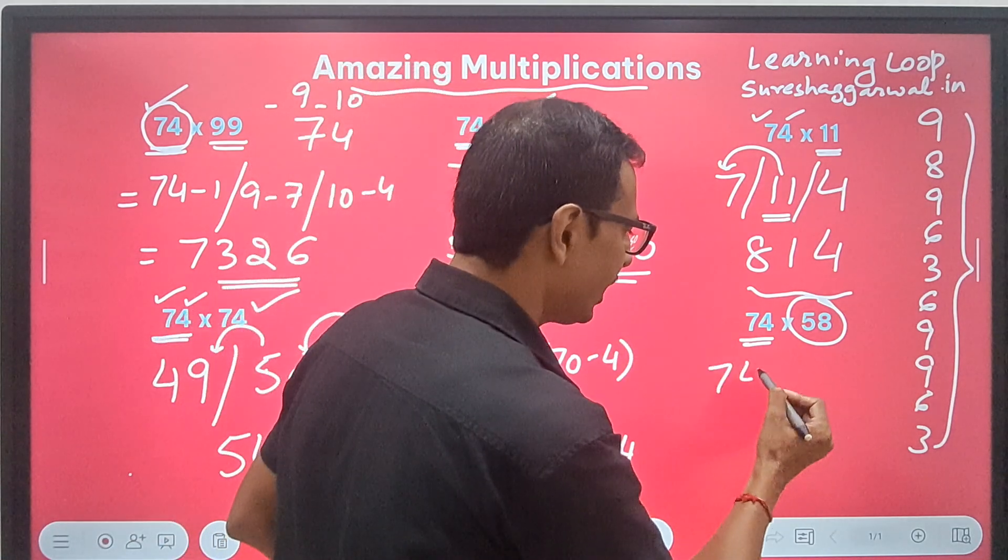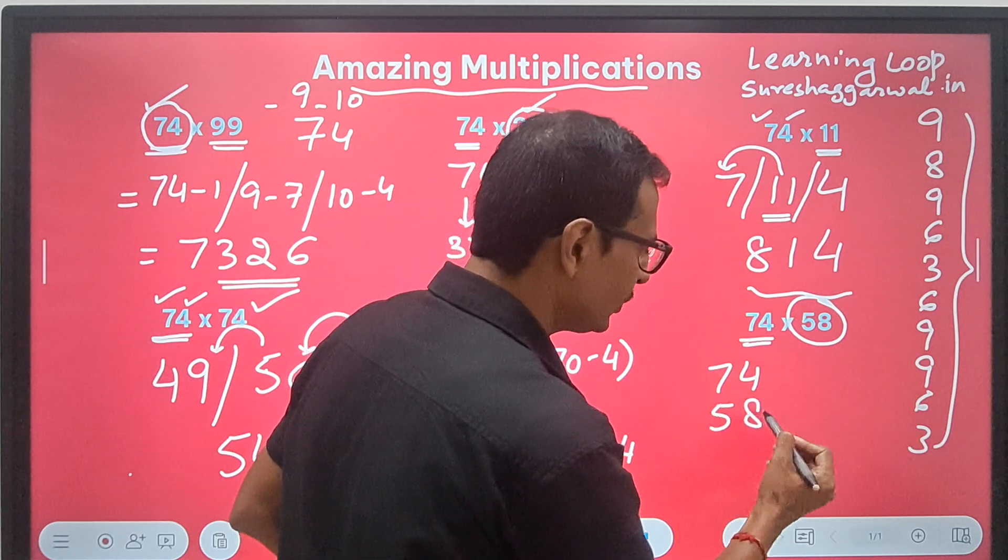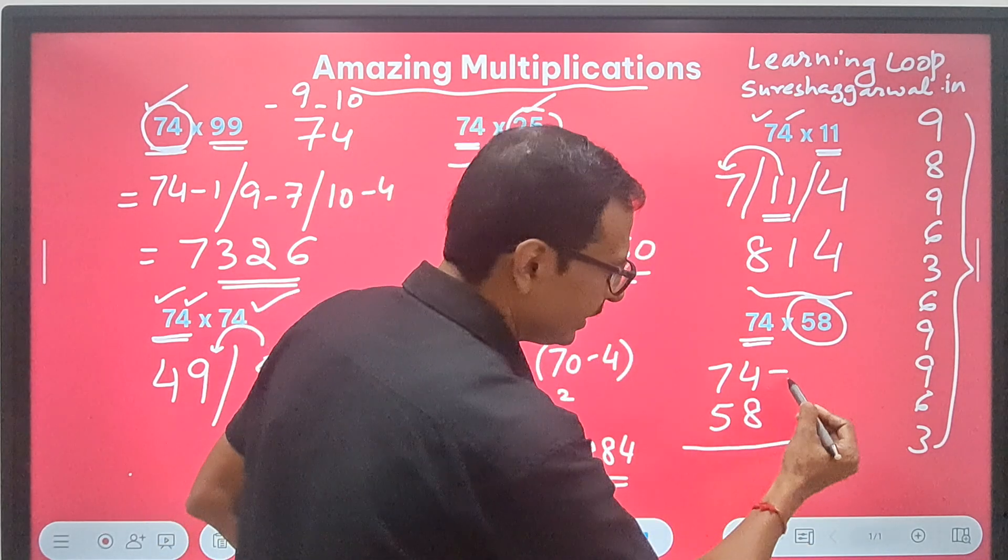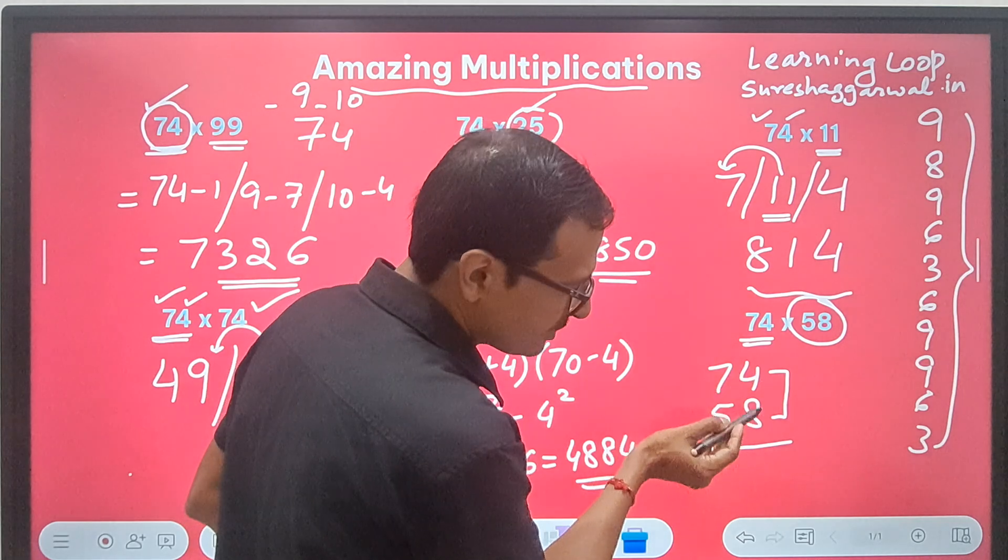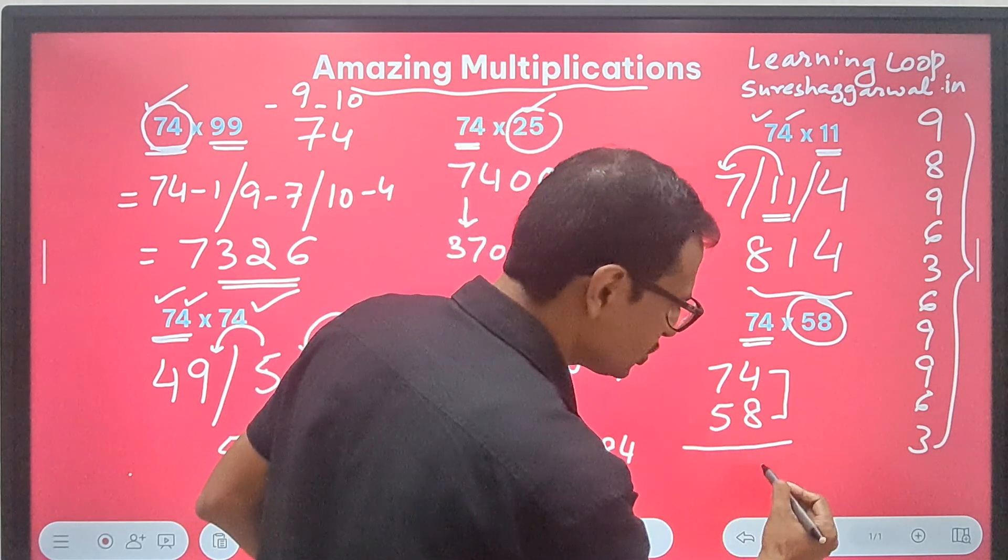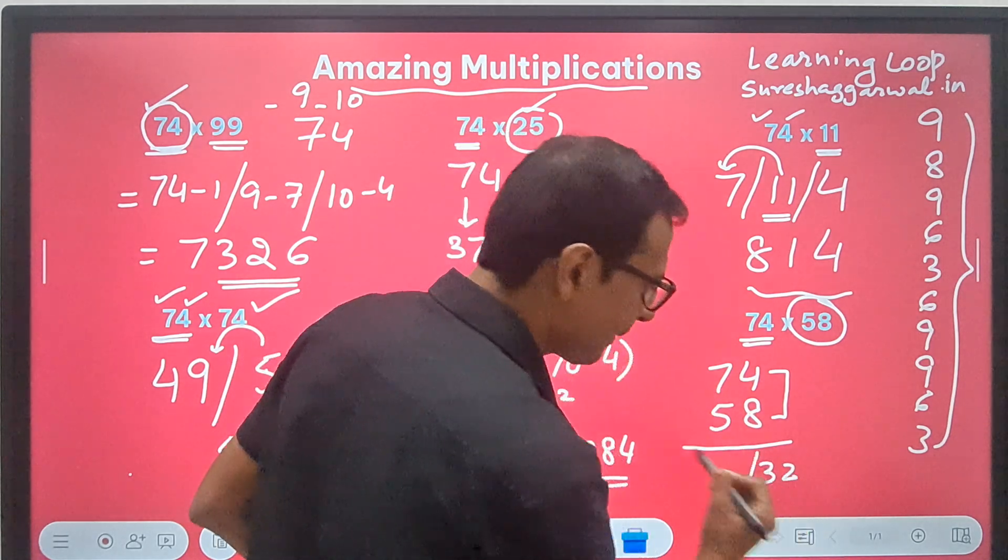I will write 74 and 58 one below the other. Then, I will write I. I means 8 times 4 is 32. So, I will write 32 here.